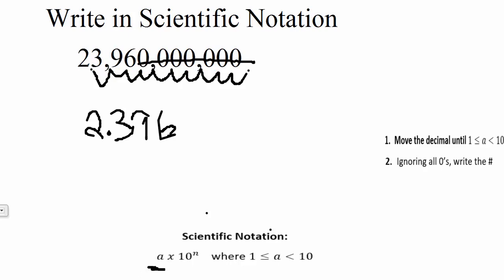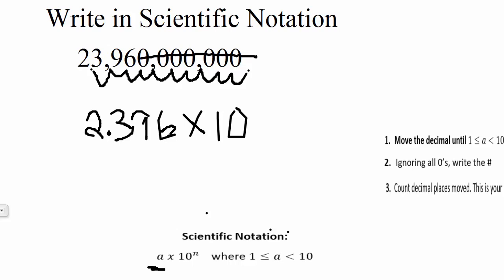Scientific notation is always times 10 to some power. Now the power comes from how many decimal places we had to move. So count the number of decimal places moved. That would be 1, 2, 3, 4, 5, 6, 7, 8, 9, 10 times. So this is going to be our exponent.